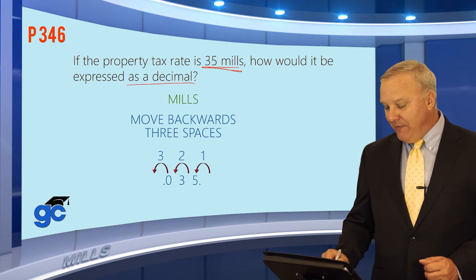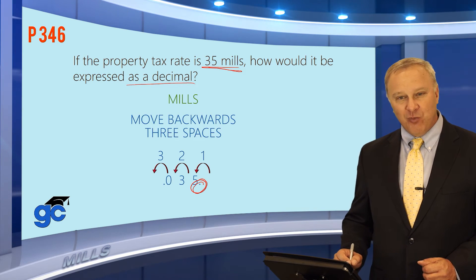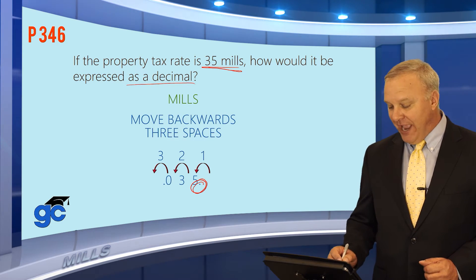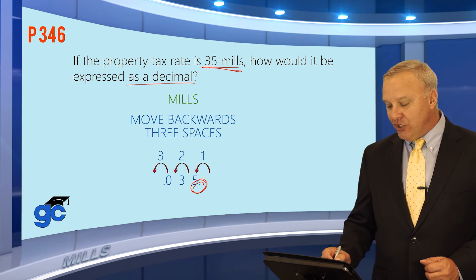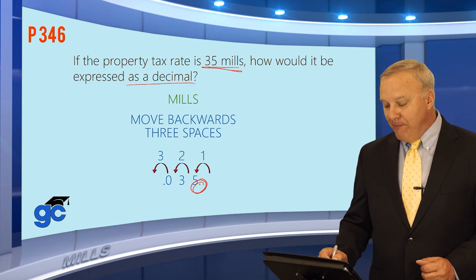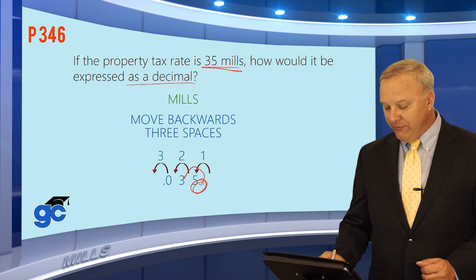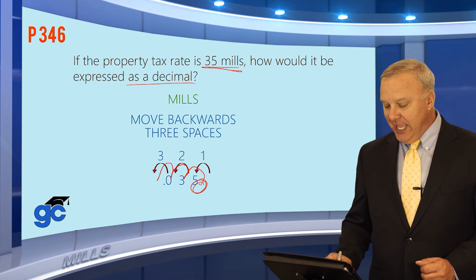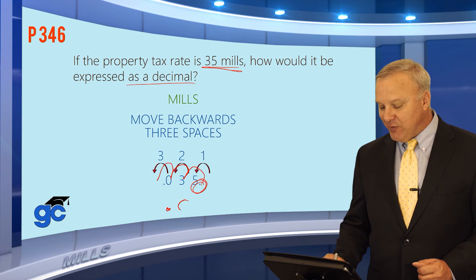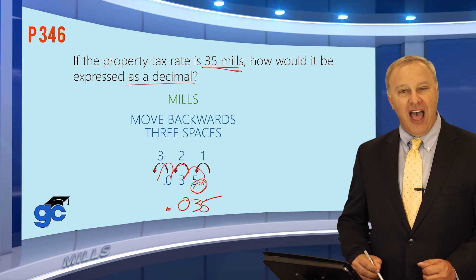35 — remember that your decimal point is over here. Anytime you have 35, your decimal point is over to the right. What you need to do to convert mills to a decimal is move that decimal point three places. So we'd move it one, two, and three. 35 mills as a decimal would be 0.035.